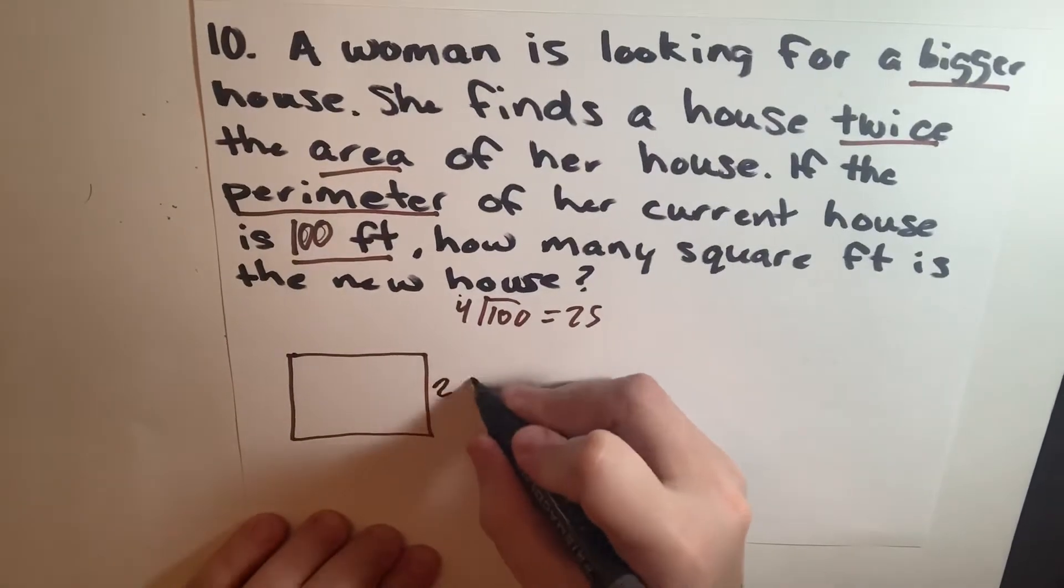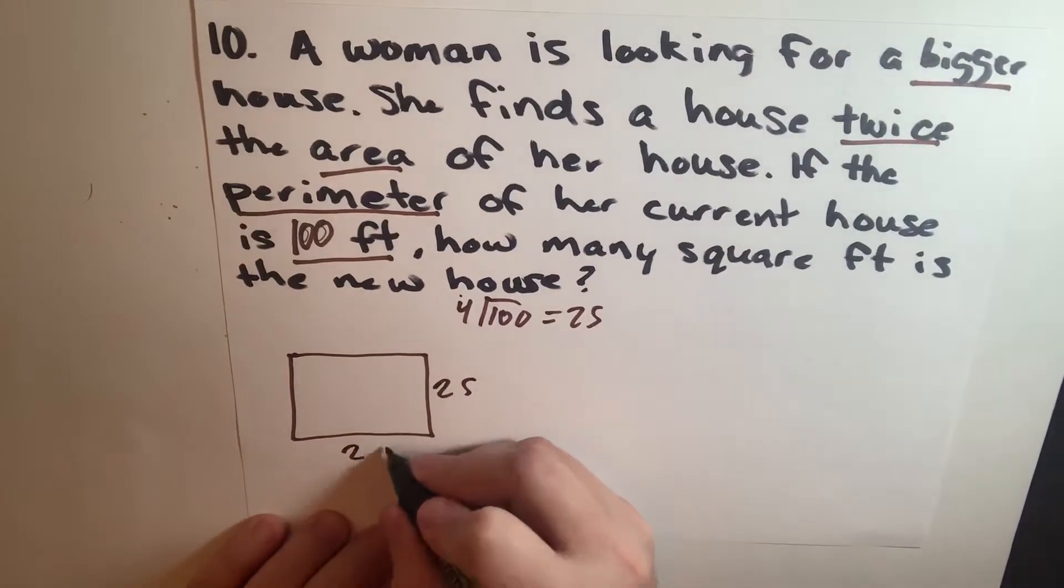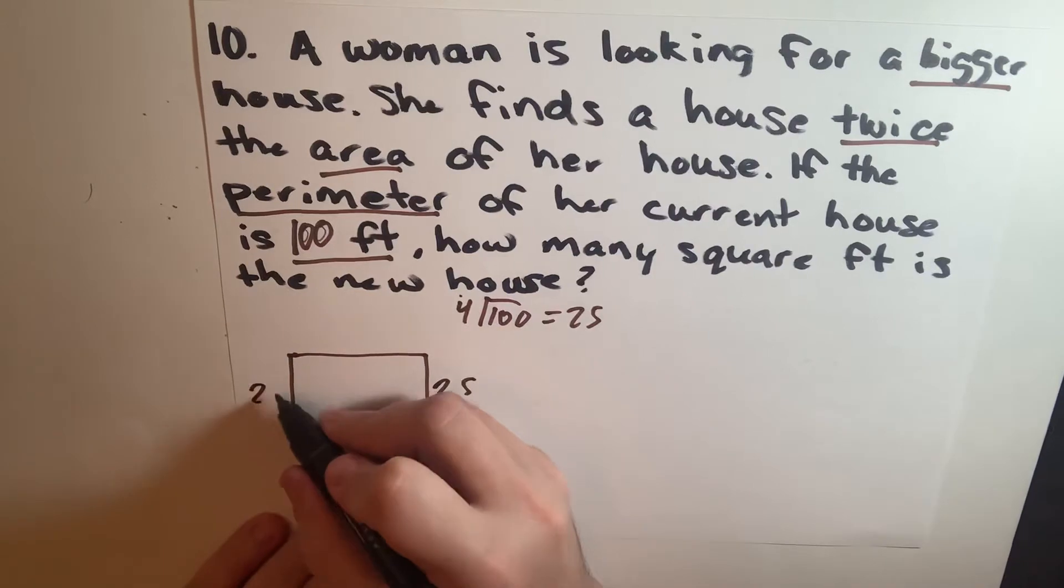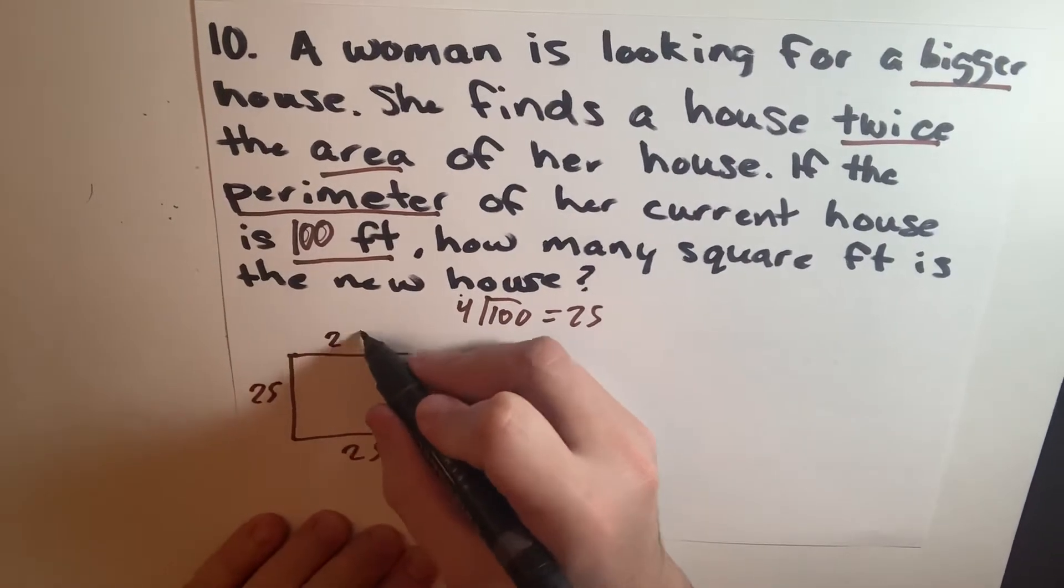So we have 25 here, 25 here, 25 here, and 25 here.